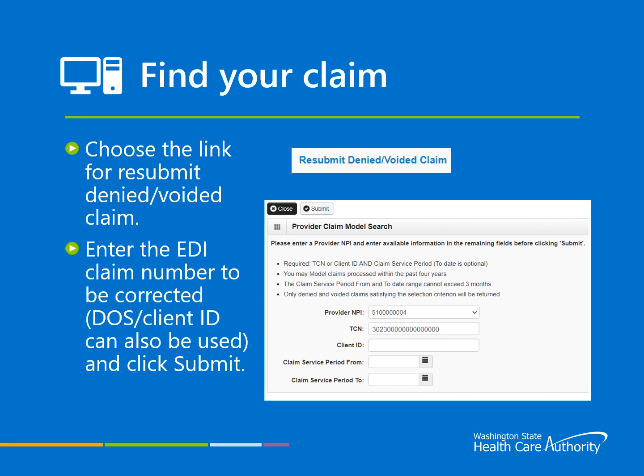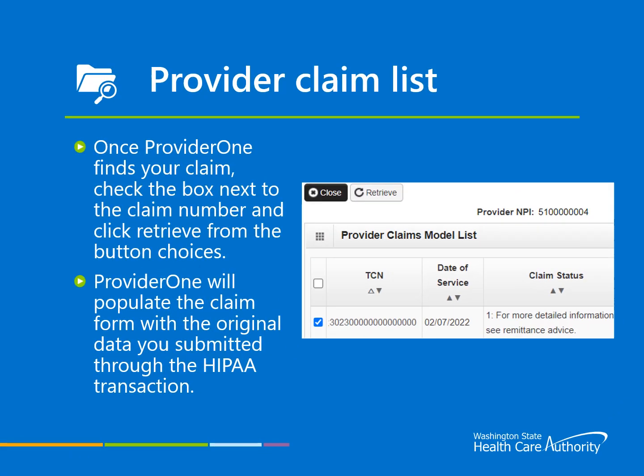The first step is choosing the correct submission option. For a denied claim, choose the hyperlink titled Resubmit Denied/Voided Claim. If you have the TCN, enter it in the TCN field. If you do not, you will need the client ID and the dates of service at a minimum. Click Submit for the data entered. Provider One will bring up your list of claims. Check the box next to the TCN and click the Retrieve button above the Provider Claims Model List heading. The system will find your original claim and take you to the Claim screen with the original received claim data entered.